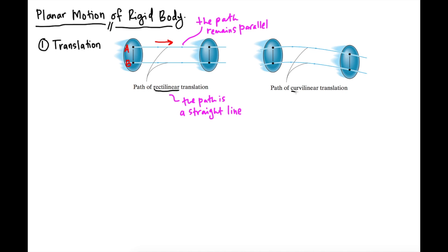In the case of curvilinear translation, the path still remains parallel, but the path is not a straight line — it is a curved path. So the difference between these two types of translation is that rectilinear has a straight-line path, and curvilinear translation has a curved path, but the path of motion remains parallel throughout the motion of the rigid body.